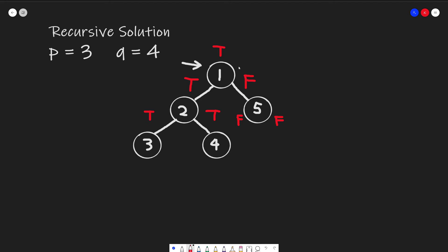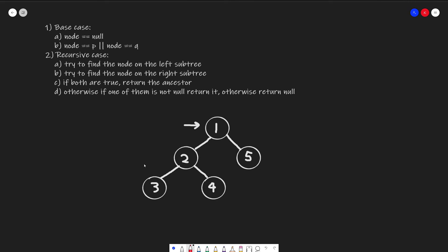Of course, we can't just return true or false, because this problem wants us to return the actual node that is our least common ancestor — so we want to somehow return node 2. Instead of returning a true or false value, what if we return the node itself? Once we find node 3, we return that node back up. Once we find node 4, we return that node back up too. Then once we're at the least common ancestor and identify it as such, we return that node back up as our answer.